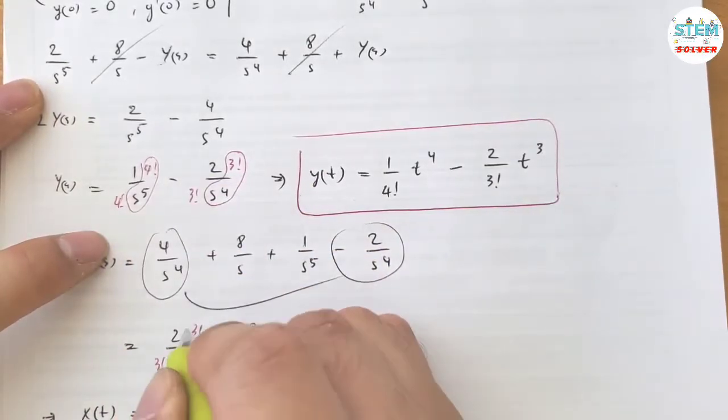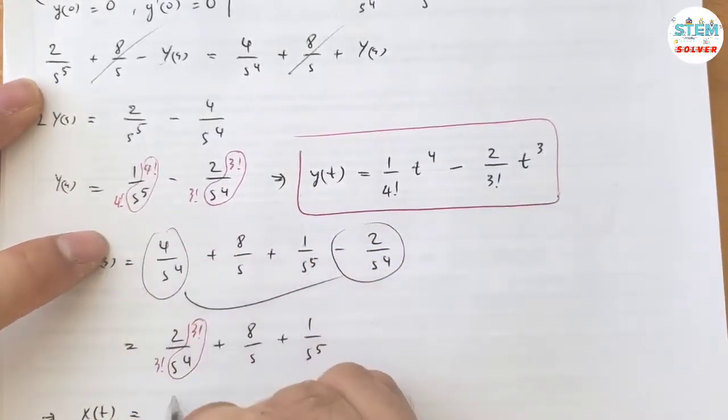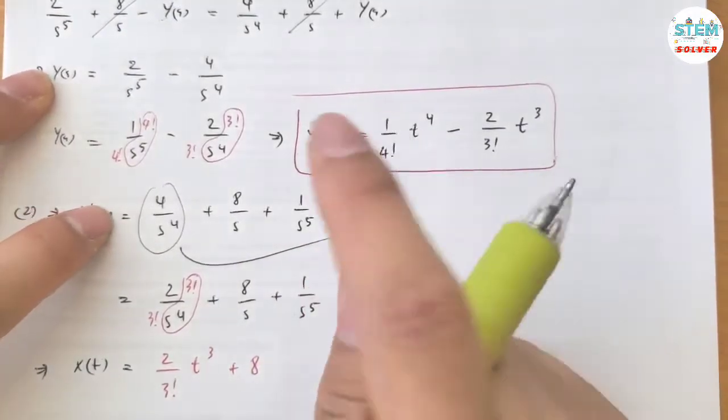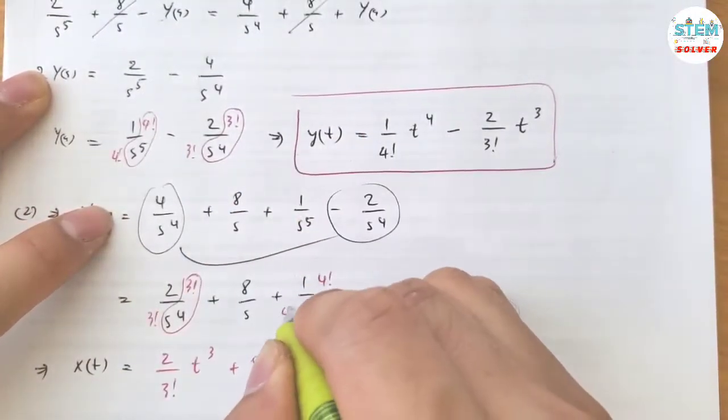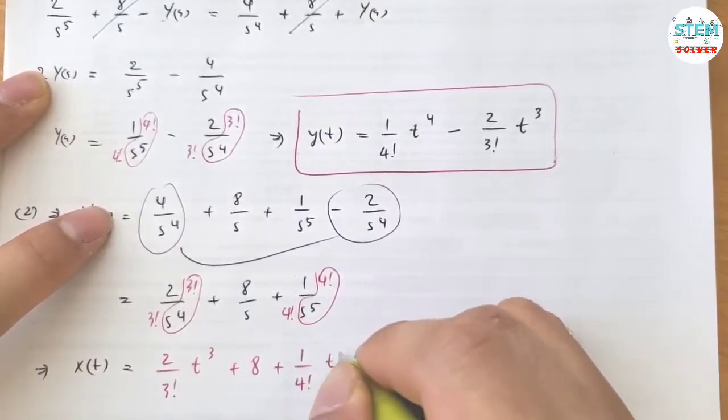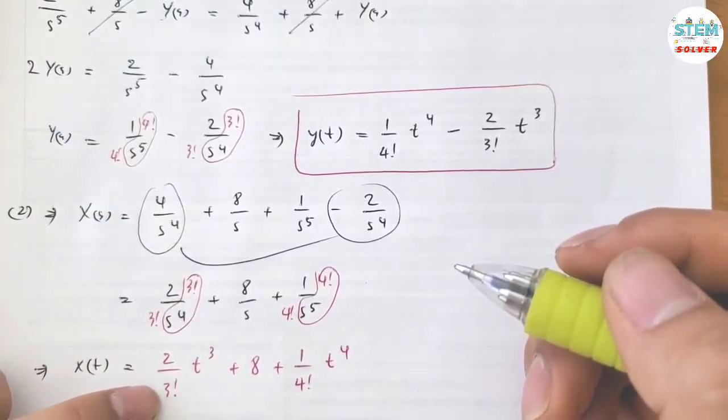3 factorial on top, 3 factorial on the bottom, so I have 2 over 3 factorial t cubed. This one is simply 8. This one similar to this one, 4 factorial on top, 4 factorial on the bottom, so I have plus 1 over 4 factorial t to the fourth.